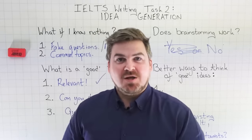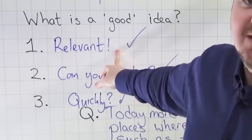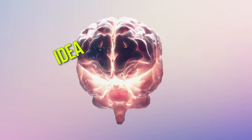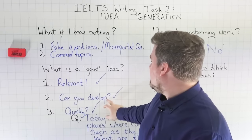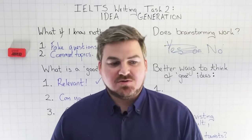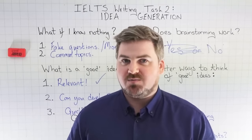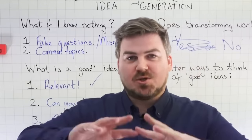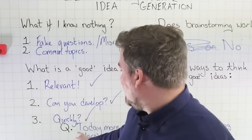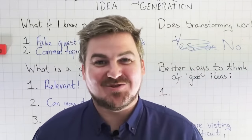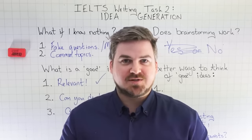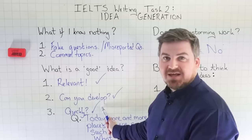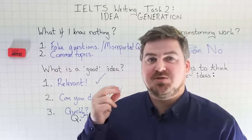Brainstorming results in irrelevant ideas. How you brainstorm is you just think of as many different ideas as possible. If you're doing that, you're going to think of irrelevant ideas. Because you're thinking of as many ideas as possible, a lot of those ideas are going to be ones you know a little bit about but can't fully develop — you can't explain them, you don't have examples for them. So what this does is result in a huge number of irrelevant or useless ideas, and it takes you a very long time to do that. You're left with a bunch of useless information, you've just wasted a few minutes, and then you have to sort through all of it. A better way would be to quickly think of relevant ideas that you can develop, and be able to do that pretty much instantly.